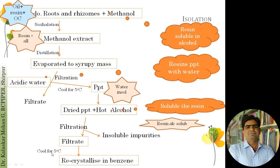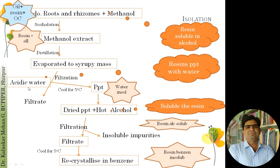To this filtrate, a non-polar solvent like benzene or hexane is added. The addition of benzene or hexane to the alcoholic solution causes the resin to precipitate out, and thus the oleoresin is separated and isolated from the roots and rhizome. The principle is: first, resins are solubilized into alcohol; the alcoholic solution is mixed with water to precipitate the resin; the precipitate is re-dissolved in alcohol to remove impurities; then precipitated again with organic solvent.